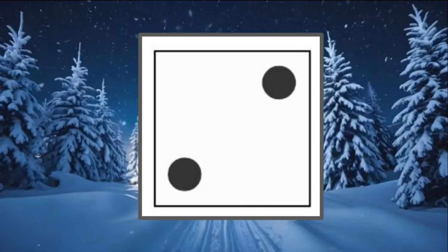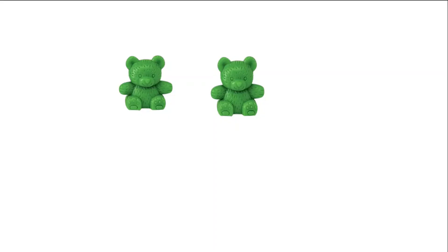Show me two with your counters. On my mat I put two bears — one, two. I had two dots on my die, and now I have two bears on my mat. Two and two are equal.